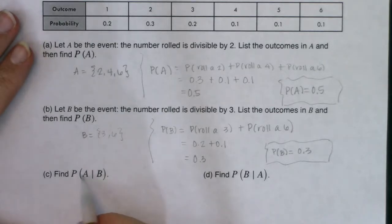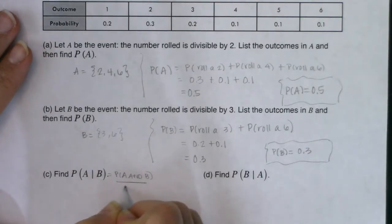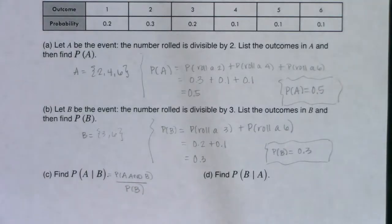So the probability of A given B. I'm going to use formula number 2. So this will be the probability of A and B over the probability of B. All right, so let's see if we can find these numbers.